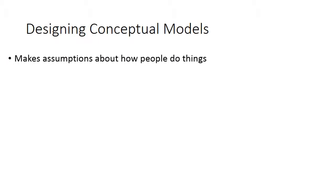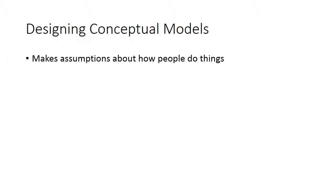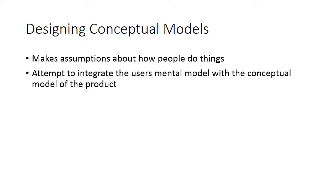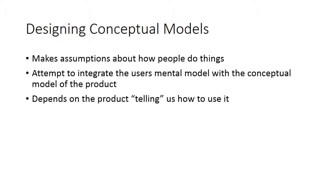When you're designing a conceptual model, you are making assumptions about how people do things. You're going to attempt to integrate what you know about the user's mental models with the conceptual model of the product. The goal is to design a product or instruction that requires no training — the product tells us how to use it. The things on the product that tell us how to use it are called affordances. This is an important term in the design world.